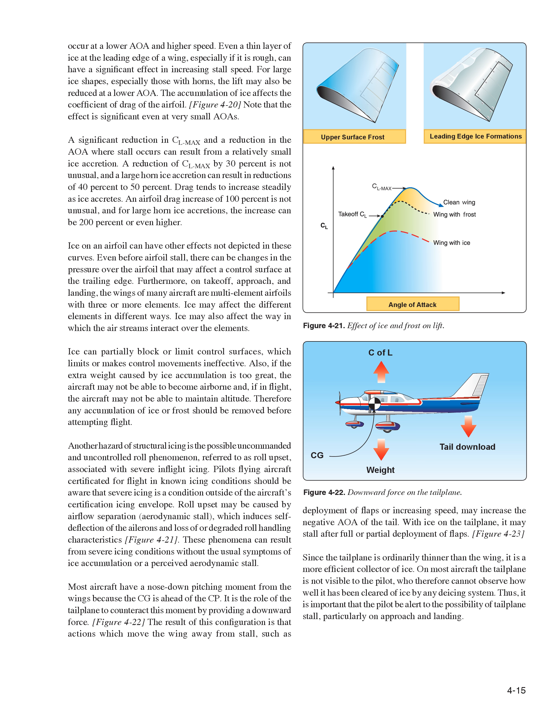Ice on an airfoil can have other effects beyond what is depicted in drag/lift curves. Even before airfoil stall, there can be changes in the pressure over the airfoil that may affect a control surface at the trailing edge. On takeoff, approach, and landing, the wings of many aircraft are multi-element airfoils with three or more elements, and ice may affect the different elements in different ways. Ice can partially block or limit control surfaces, making control movements ineffective. Also, if the extra weight caused by ice accumulation is too great, the aircraft may not be able to become airborne, and if in flight, the aircraft may not be able to maintain altitude. Therefore, any accumulation of ice or frost should be removed before attempting flight.